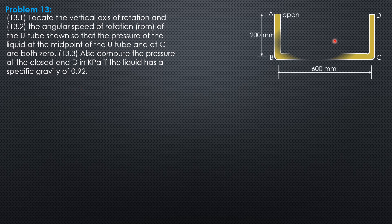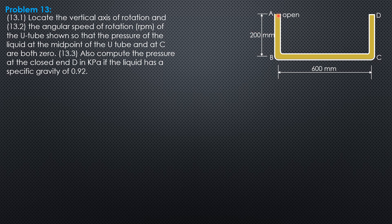So this is the given figure. We have a U-tube with vertical legs, 200 mm height and 600 mm horizontally, ABCD. A is open, D is closed.